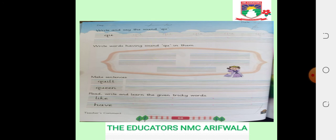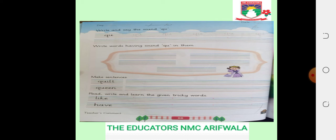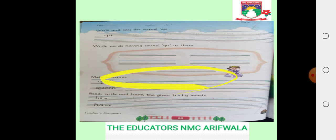Write words like queen, quill — okay. For mixed sentences, you have to make two sentences, for example: 'I like red quill' or 'My mother is a queen.' You have to make two sentences — keep it easy.